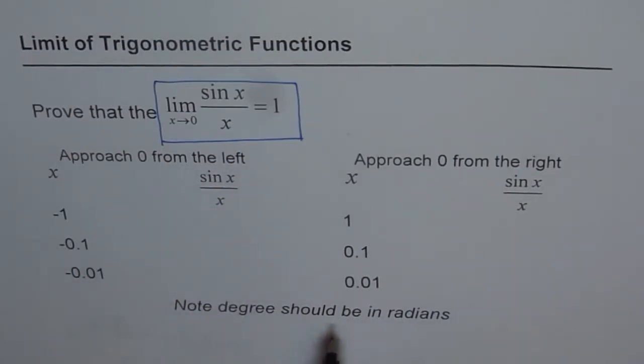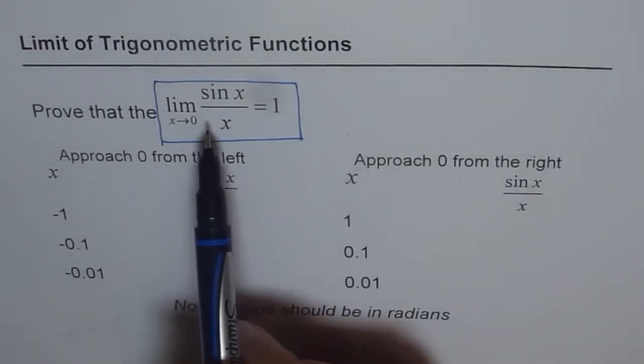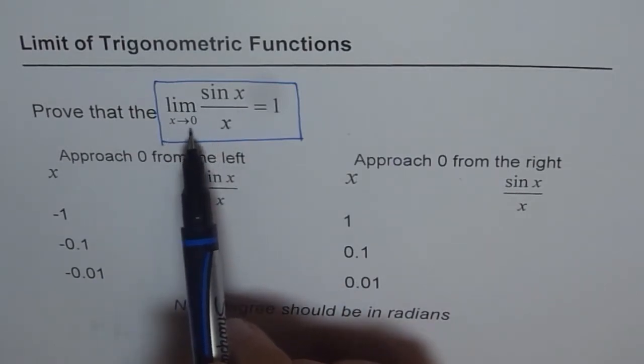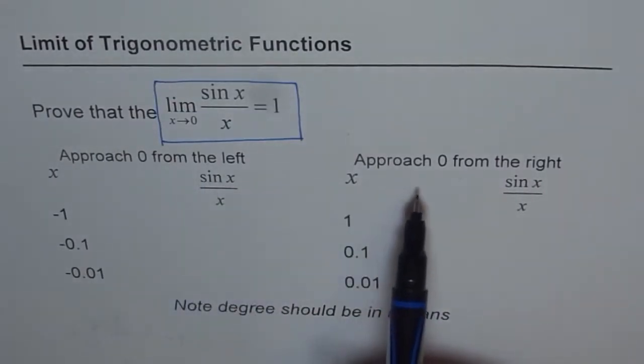So what you need to do is, I have already done this for you. I have a table of values. I have a table here. So you need to test the value of function sin x over x as x approaches 0 from both sides, from left side and from the right side.